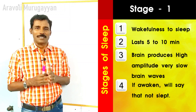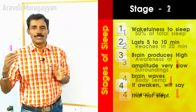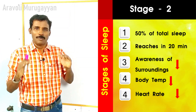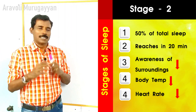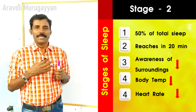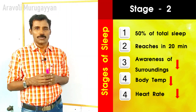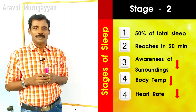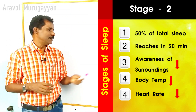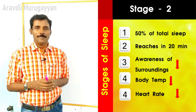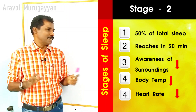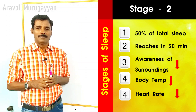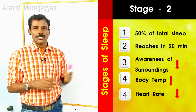After 5 to 10 minutes in Stage 1, you enter Stage 2. In Stage 2, your awareness of the environment comes down, your body temperature also comes down, and your heartbeat rate slows down. Normally a person sleeping at 10 o'clock will reach Stage 2 by 10:20. 50% of our total sleep is spent in Stage 2 — so if you sleep 8 hours a night, 4 hours will be in Stage 2.